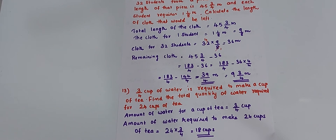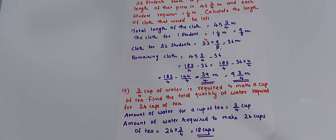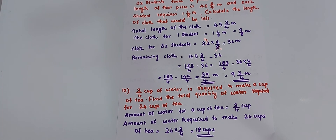13th question: 3 by 4 cup of water is required to make a cup of tea. Find the total quantity of water required for 24 cups of tea. Here, 3 by 4 cup of water is needed to make one cup of tea. It is very easy — multiply 3 by 4 by 24, and you get 18 cups. So, 18 cups of water are required to make 24 cups of tea.